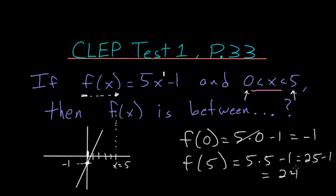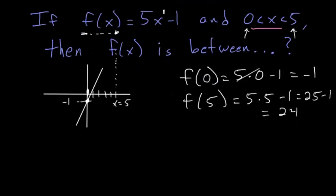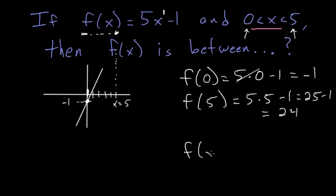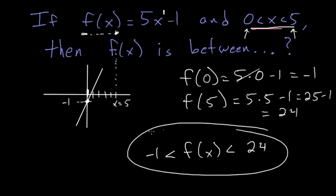So now we know that the function has to always be bigger than negative 1 on this domain, and it's always less than 24. So this is our final answer.